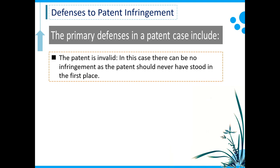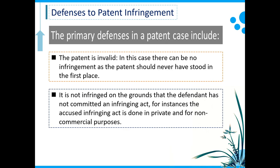After the validity issue is settled by those proceedings, the two parties — the plaintiff and defendant — would return to the previous court hearing the litigation issue. Number two: the accused act is not infringing, because the defendant has not committed an infringing act at all. For instance, the accused infringing act is done in private and for non-commercial purposes. For example, you bought an infringing product on the market and use it for your own private purpose. The buying and using of the infringing item for your own private purpose is not an infringement.